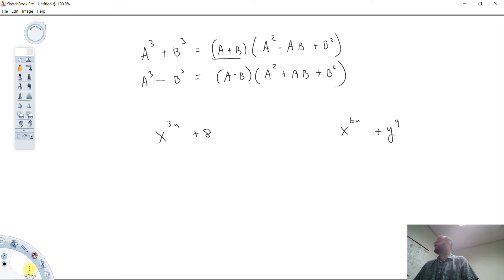And now the idea here is, looking at this first one, we want to be able to write it as like something cubed plus something cubed. And the million-dollar question, how do we do that?